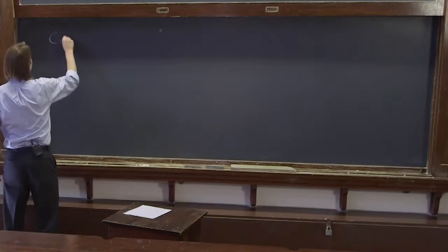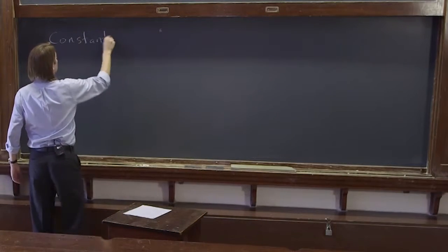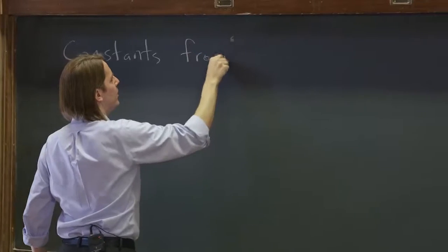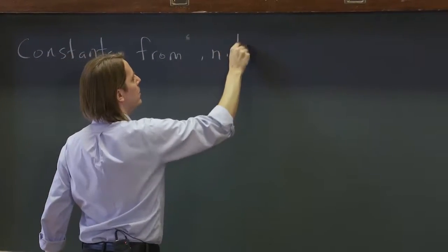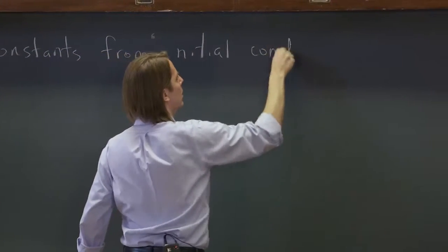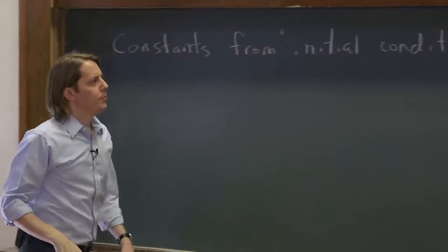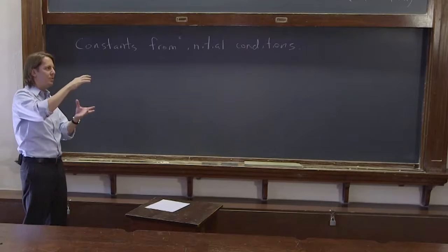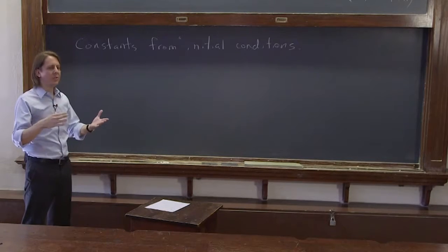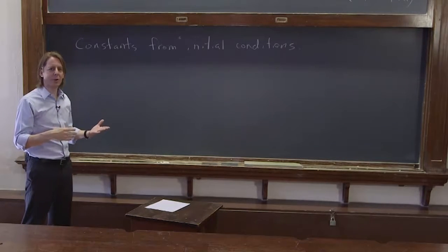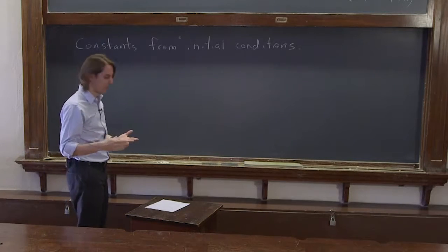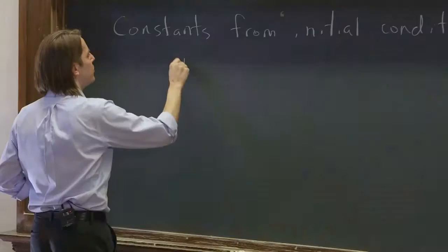All right, let's get our constants as always from initial conditions. Our initial conditions are usually the initial position and initial velocity. You do the same thing - just calculate what those are for the normal coordinates. So let's look at initial positions.